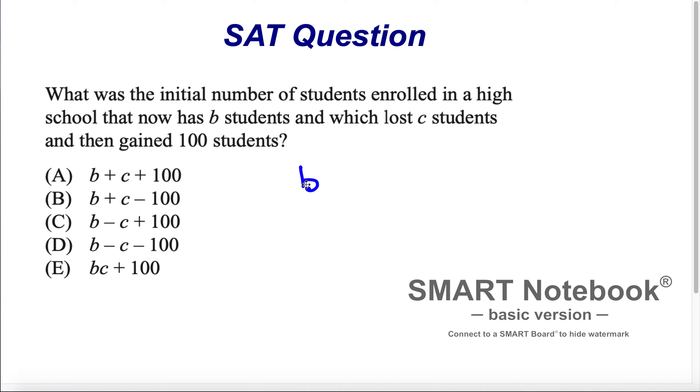But which lost? It means that from the initial number of students, it lost C students. Let's say x represents the initial number of students. We don't know how many they were. So here, lost C students.